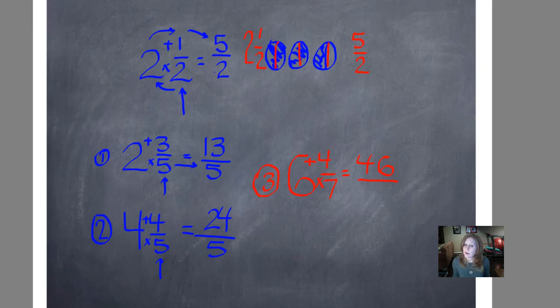That's our new numerator, and our denominator stays the same. There you go. That's how you convert a mixed number to an improper fraction, and they are equivalent. They are equal. They represent the same amount.